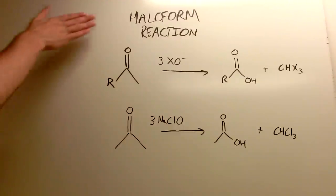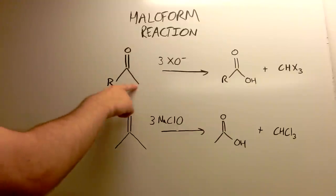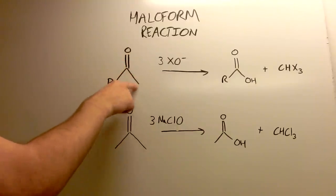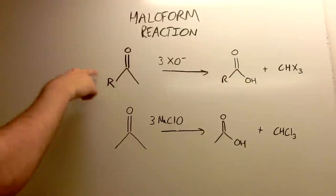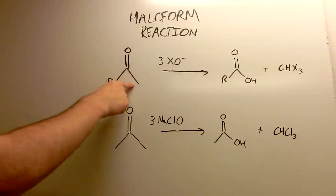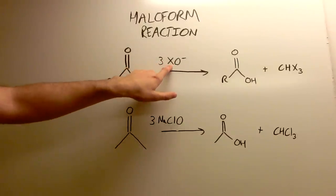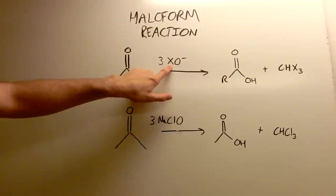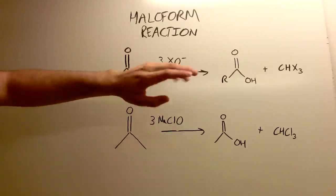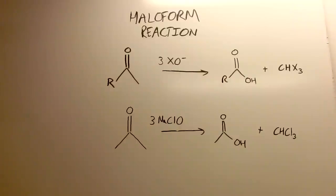We'll be producing chloroform using the haloform reaction. The haloform reaction involves a methyl ketone — a ketone that has a methyl group directly adjacent to it. This will work with many ketones, but the rule is that it has to be a methyl ketone. It reacts with a hypohalite ion — three of them in fact — and X is of course a halogen: fluorine, chlorine, iodine, bromine. This doesn't work with fluorine, however, because the hypofluorite ion is not known to exist. So you can use this practically with iodine, bromine, and also chlorine.